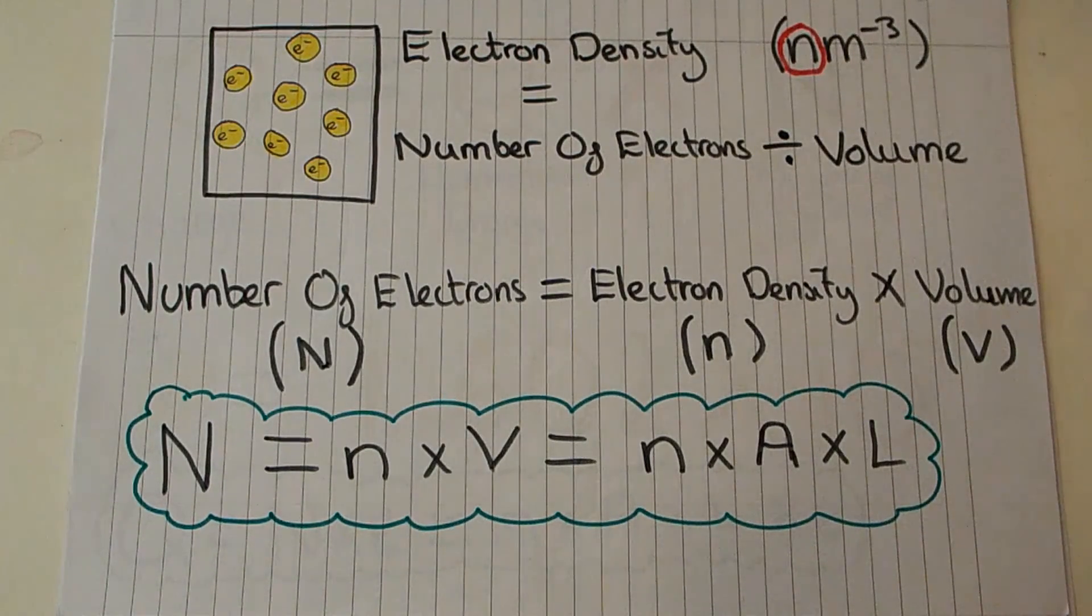We said just a minute ago that volume was equal to cross-sectional area times length, therefore we can say that number of electrons N is equal to electron density n times cross-sectional area A times the length L that the electrons are moving across. This gives us now our second step.